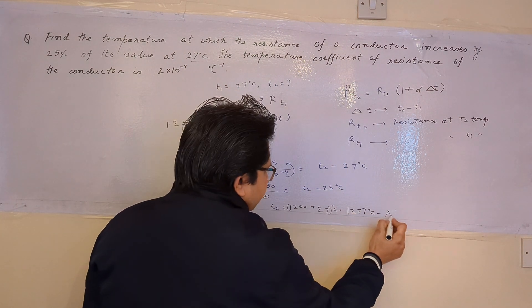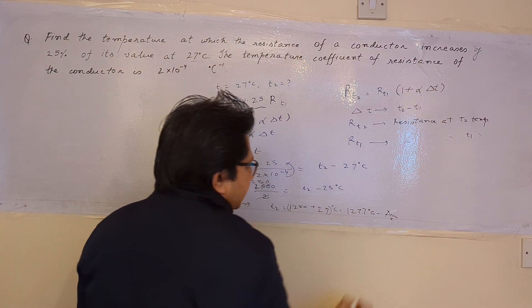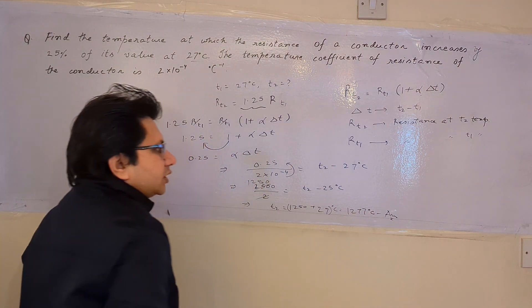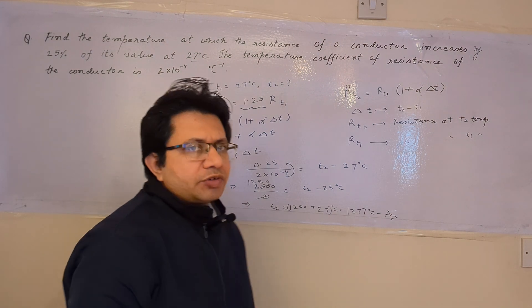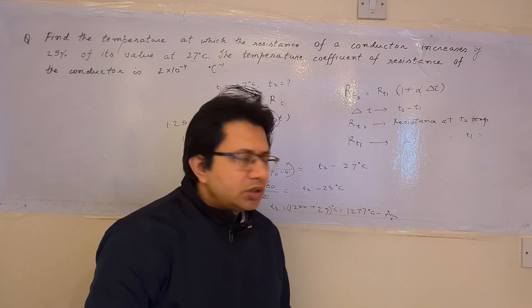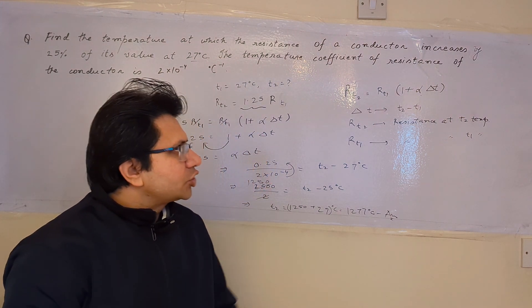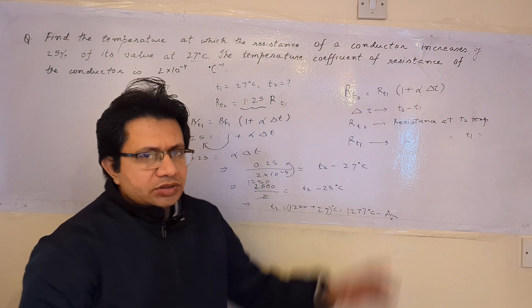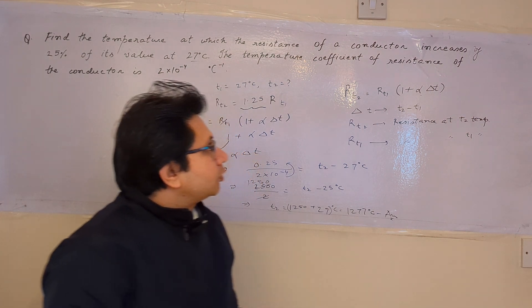This comes out to be 1277 degree Celsius. This is the final temperature where the resistance becomes 25 percent more compared to the initial resistance R_T1.